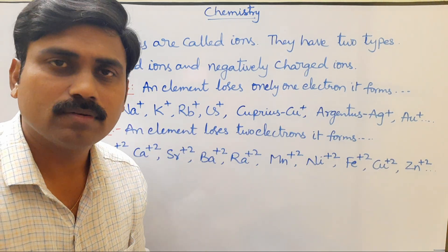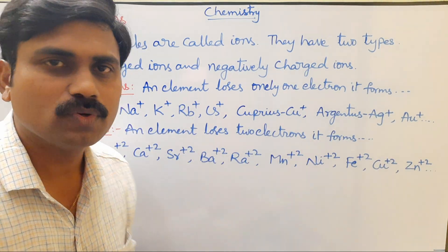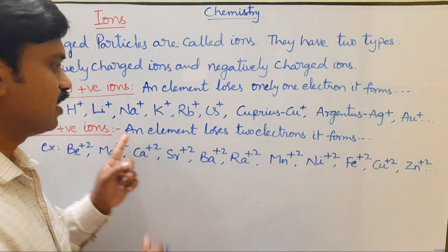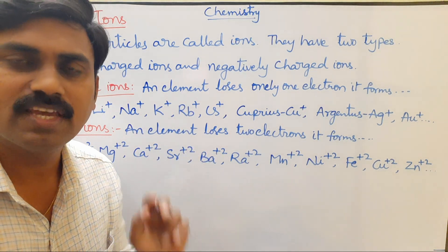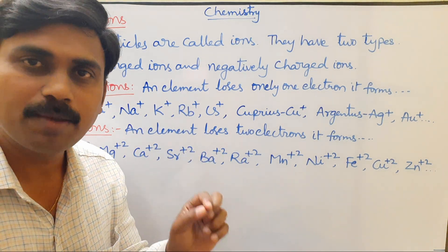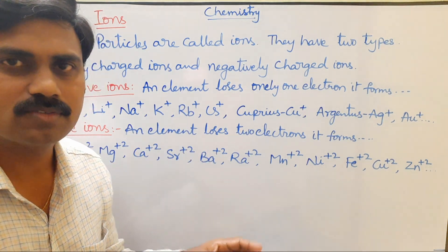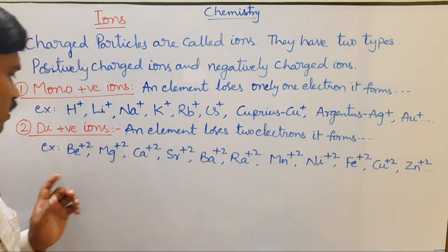Second: di-positively charged ions. When an element loses two electrons, it forms di-positively charged ions.